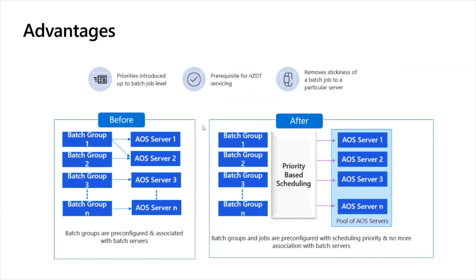Looking at the advantages: before PBS, you set up batch groups and assigned them to batch servers — either one-to-one or one-to-many. With Priority-Based Batch Scheduling, you no longer need that configuration. You set up the batch group with a priority, and the PBS framework or engine decides which batch server to use to process available batches based on their priority. There is no pre-configuration required as was previously needed.